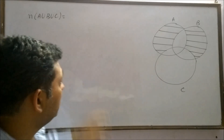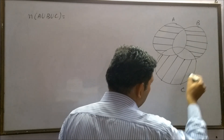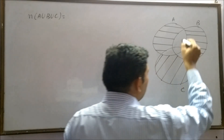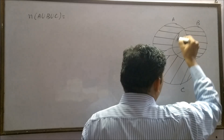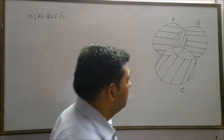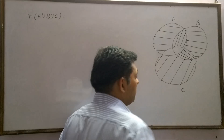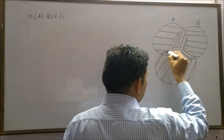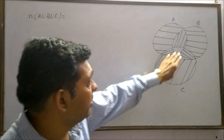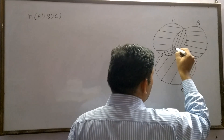And this A union B union C also contains exactly C. This region contains A and B but not C. Similarly, this region is B and C but not A. And this shared region consists of A and C but not B. And one portion remaining here is A intersection B intersection C, meaning all 3 elements are contained in this region.